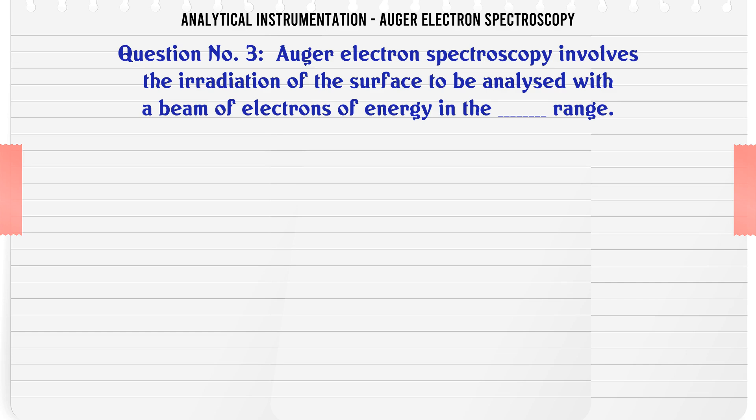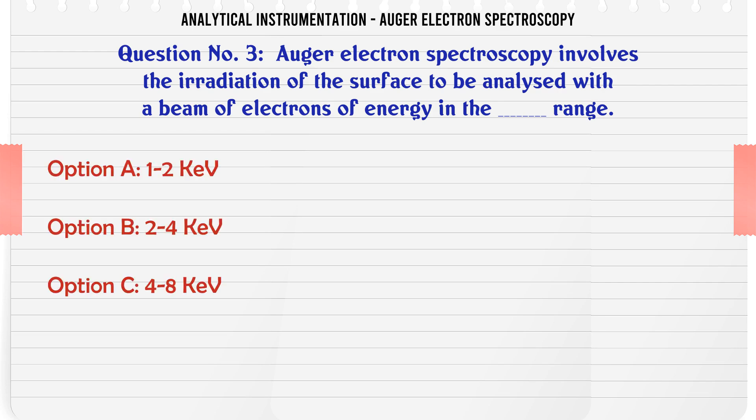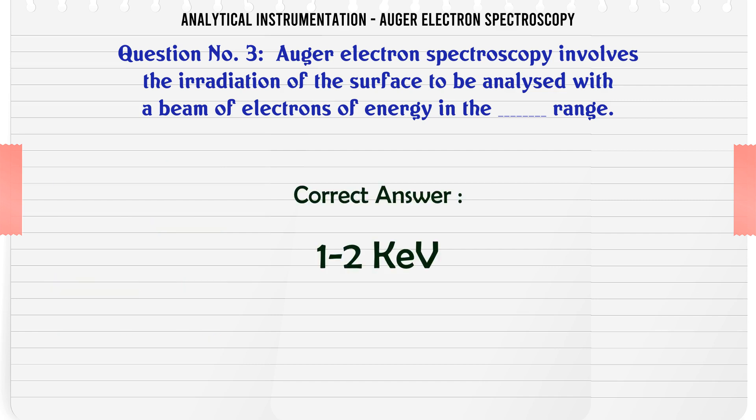Auger electron spectroscopy involves the irradiation of the surface to be analyzed with a beam of electrons of energy in the range: A. 1-2 keV. B. 2-4 keV. C. 4-8 keV. D. 1-8 keV. The correct answer is 1-2 keV.